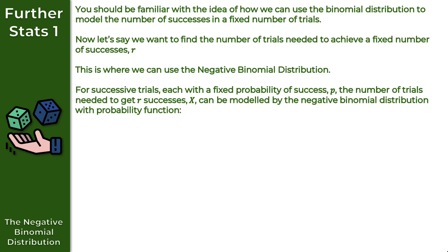For successive trials, each with a fixed probability of success which we denote as P, the number of trials needed to get R successes, X, can be modelled by the negative binomial distribution with the following probability function. It might look a little challenging but it's not too bad. This is X minus 1 choose R minus 1 notation — we have X minus 1 choose R minus 1, then times P to the power of R, then times 1 minus P to the power of X minus R. You don't have to worry about memorising this; it's also given in the formula book.